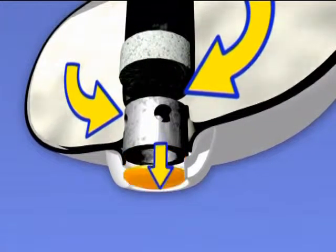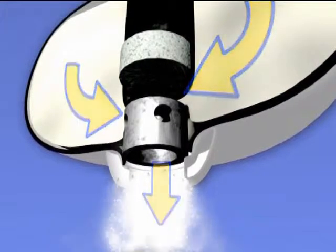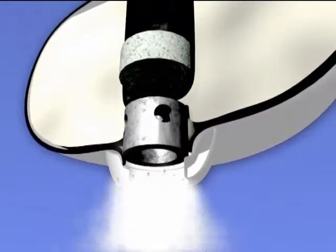On achieving the working pressure, the rupture disc is broken, and a gas-powered jet under high pressure is supplied through the nozzle to the fire site.